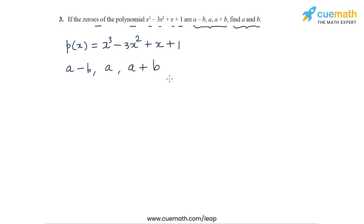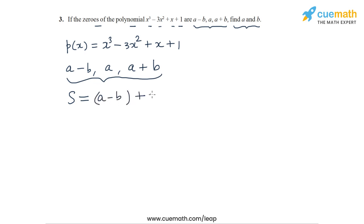What reasoning can we use to solve this problem? Let's make use of the relationship between the zeros and the coefficients. The sum of the zeros from the zeros themselves should be equal to a-b + a + a+b. The minus b and plus b cancel out, and this is equal to 3a. So from the zeros, the sum is 3a.